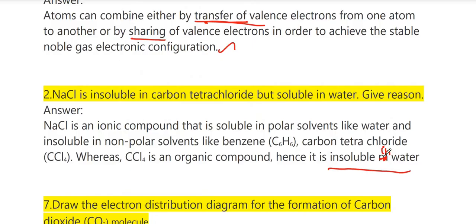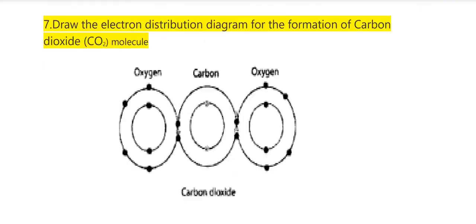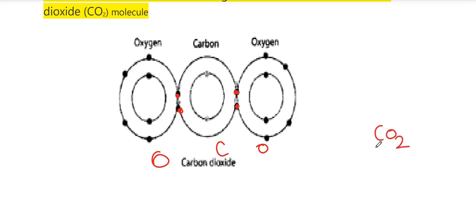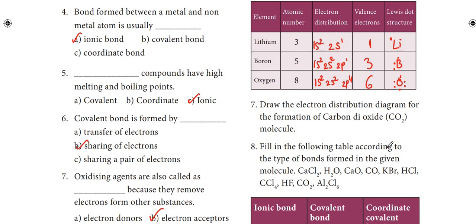Seventh question: draw the electron distribution diagram for the formation of the carbon dioxide (CO2) molecule. Oxygen's diagram is placed on each side, sharing electrons with carbon in the center, forming CO2 through double covalent bonds on both sides.